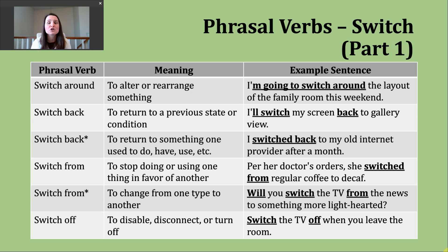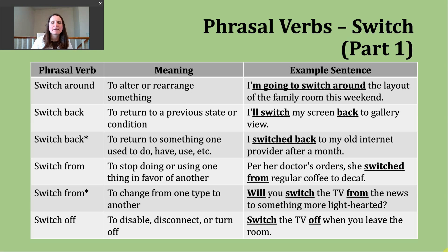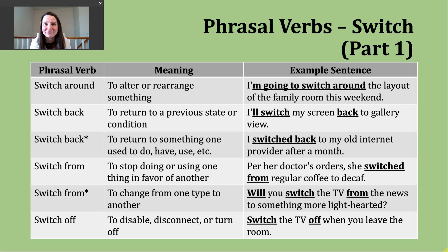So 'I'm going to switch around' is an example of the simple future using 'be going to.' Here the person is probably talking about moving the couch from one side of the room to another, maybe moving some coffee tables, the TV, or whatever other pieces of furniture are in that room to different places.